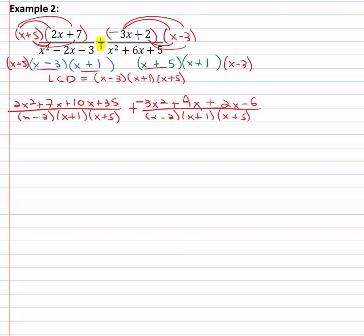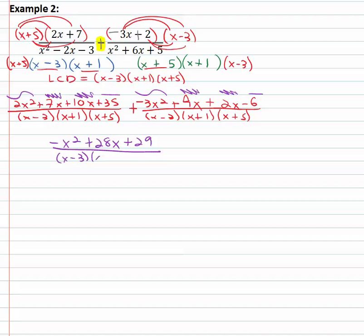There's a lot to combine, but we can do it. 2x² minus 3x² is negative x². For x terms: 17x plus 9x plus 2x is 28x. For constants: 35 minus 6 is 29. So the combined numerator is negative x² plus 28x plus 29, over the common denominator x minus 3, x plus 1, x plus 5.